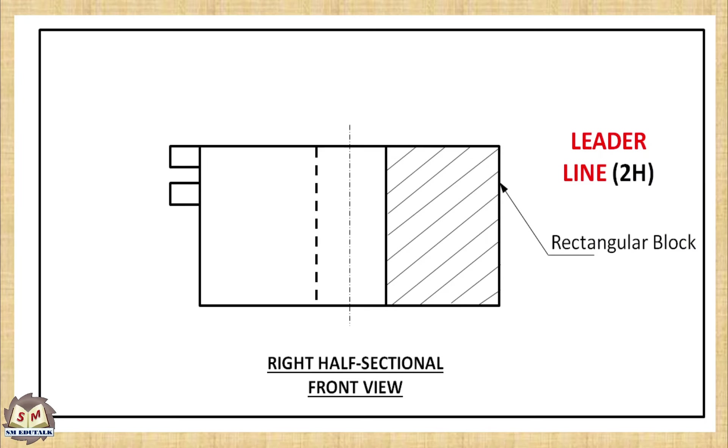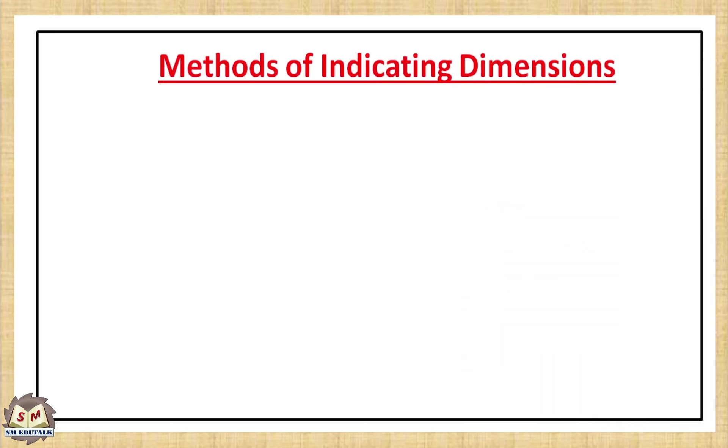Whenever leader line moves inside the object, it uses dot instead of arrow head. Oblique stroke can be used wherever dimensional space is too small. Leader line can also be used at this place to write the dimension text conveniently. But in this case, leader line has a plain end. It doesn't hold any arrow head or dot.